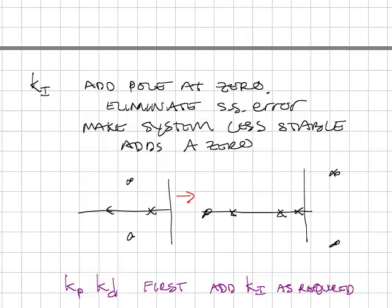As you increased KD, you'd find the system tends to have more damping, and as you add in KI, you'd find that you would get rid of the steady-state error, but you may affect the stability, so you'd have to go back and tweak your KP and KD.